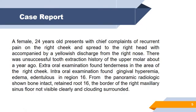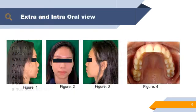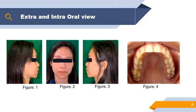From the anamnesis, we have information on a 24-year-old female with a chief complaint of recurrent pain on the right cheek spreading to the right side of the head, accompanied by yellowish discharge from the right nostril. There was a history of unsuccessful tooth extraction of the upper molar about one year ago. Extraoral examination found tenderness in the area of the right cheek. From the extraoral view, no other abnormality was found except the tenderness on the right cheek.